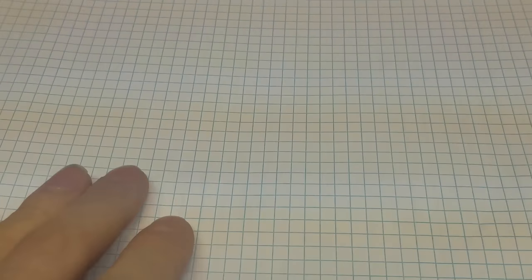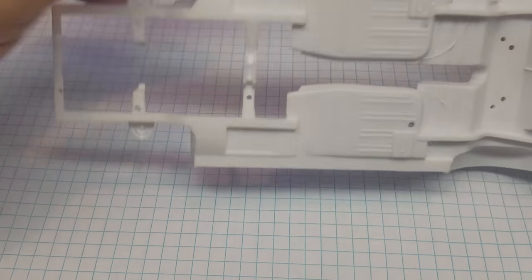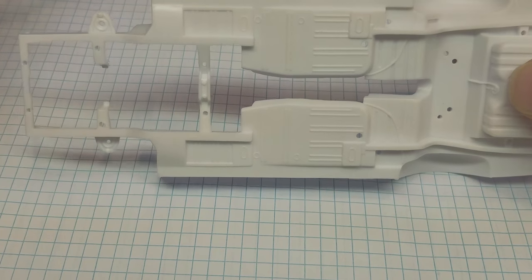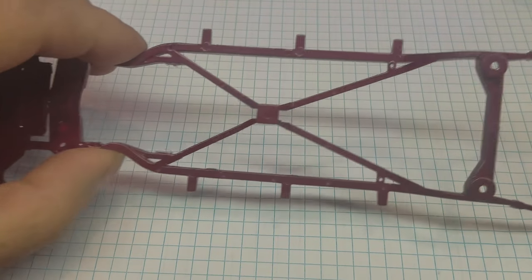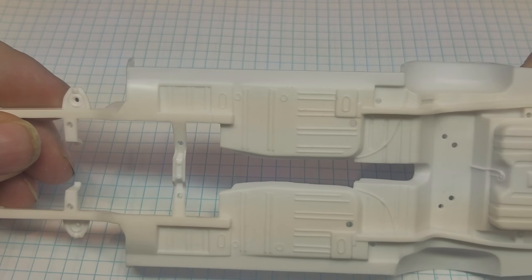So first thing I'd like to start with is some graph paper. It helps to keep everything square, sitting right, everything like that. The next thing you're gonna need is the actual floor pan, or as you guys know in the case of the Oldsmobile, the actual frame rails.